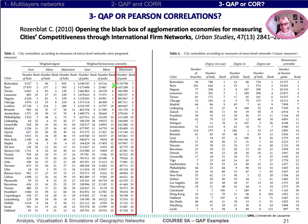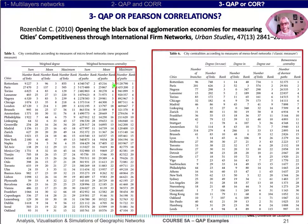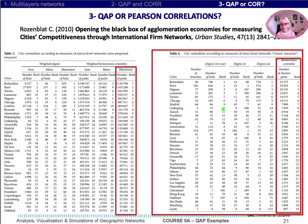We then compared this result implemented at the micro level to the one more classically calculated on the linkages aggregated at the meso level by cities. At the meso level, we also chose the betweenness centrality.